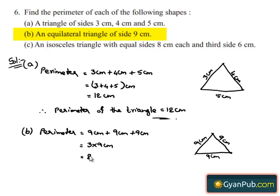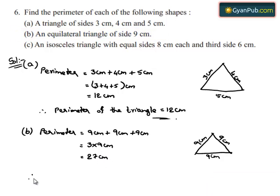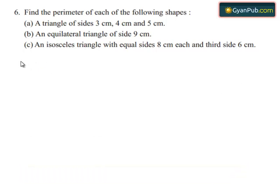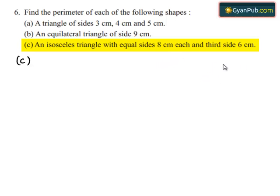3 times 9 gives 27 centimeters. Therefore, the perimeter of the given equilateral triangle is equal to 27 centimeters. Taking down the C bit — given to find the perimeter of an isosceles triangle with equal sides 8 centimeters each and third side 6 centimeters.